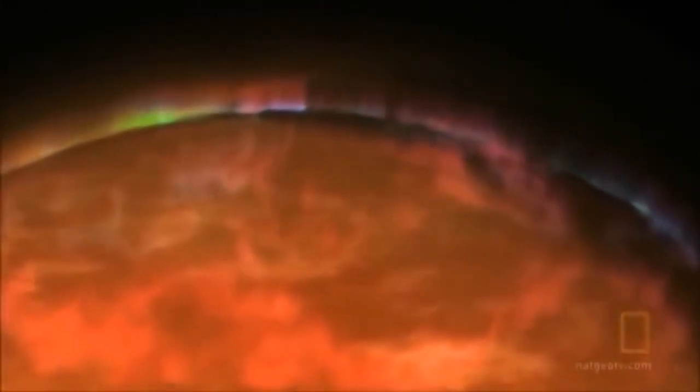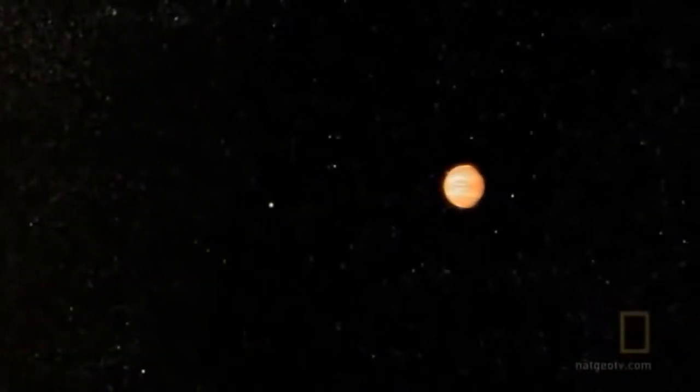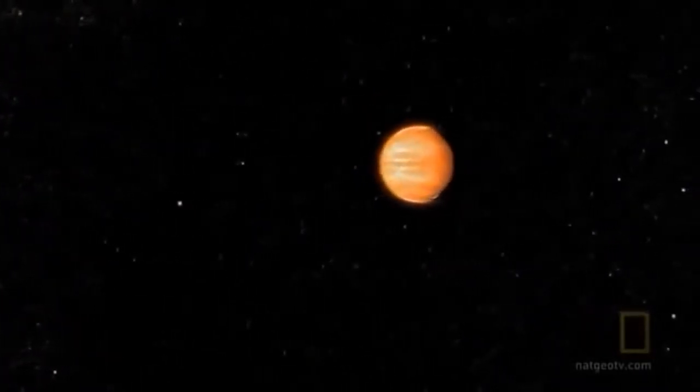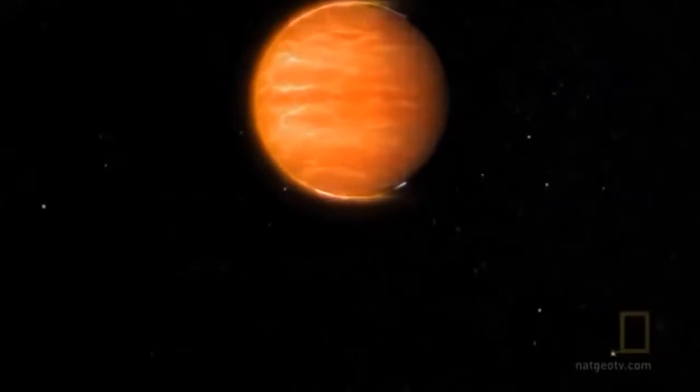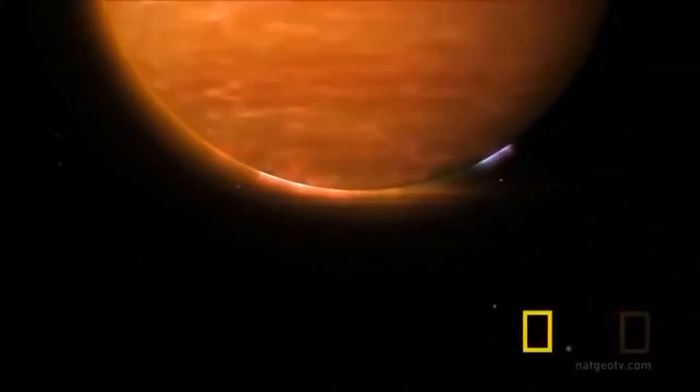A gas giant is a planet made mostly of hydrogen and helium. Only the outer layers are gas, but inside, hydrogen and helium is compressed to huge pressures that doesn't resemble a gas at all. Unlike anything found in our solar system, this is an entirely new class of planet, what scientists call a hot Jupiter.